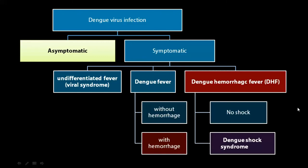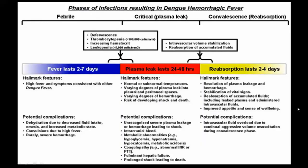Dengue hemorrhagic fever shows hemorrhagic symptoms which can result in shock, or it may be resolved with proper treatment. The phases of infection resulting in Dengue hemorrhagic fever are described in three phases: a febrile phase, a critical plasma leak phase, and a convalescence or reabsorption phase. The febrile phase lasts for two to seven days, the critical plasma leak phase lasts for at least one to two days, and the reabsorption phase lasts for two to four days. The plasma leak phase is the most important among all of these.